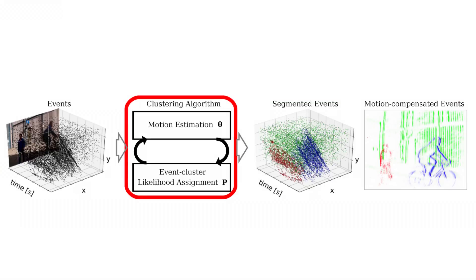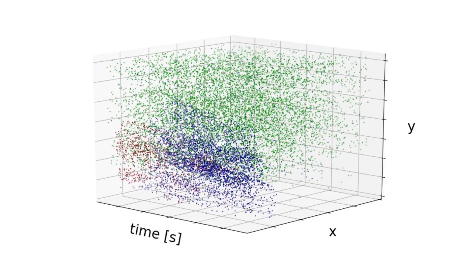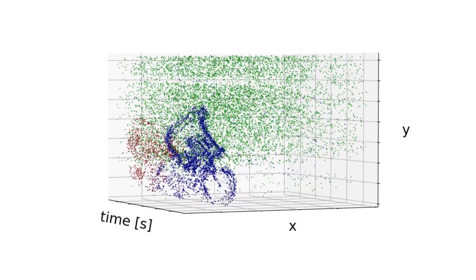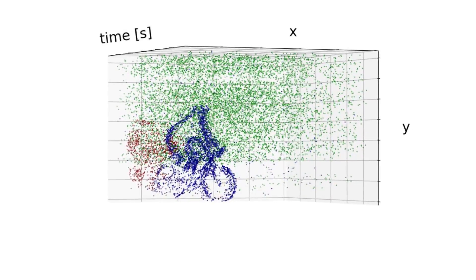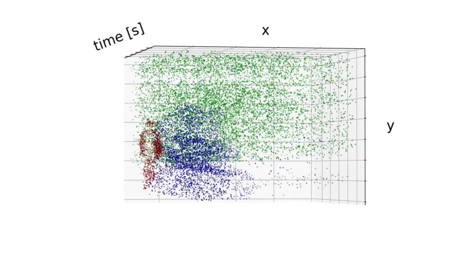We achieve this through iterative motion compensation and event cluster likelihood estimation. If we view a set of events in a three-dimensional spatio-temporal volume, we can transform the events so that we are viewing them along the motion trajectory of the objects that caused them. When we do this, the events for that object become sharper.